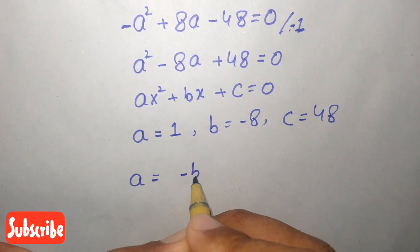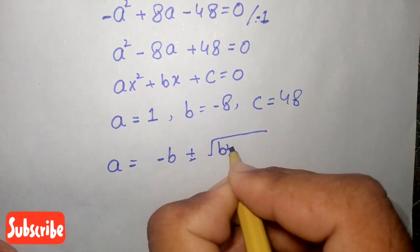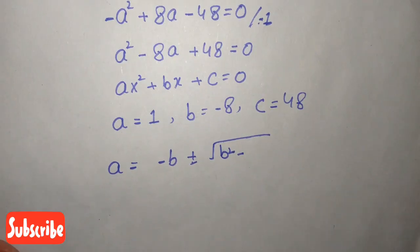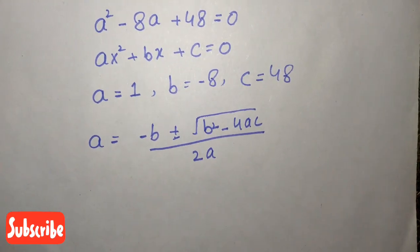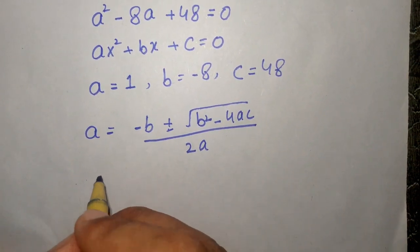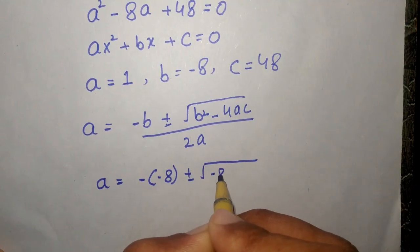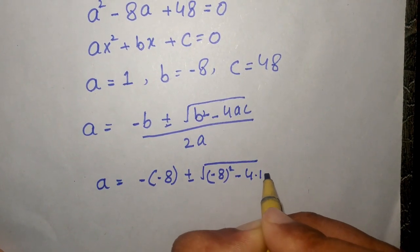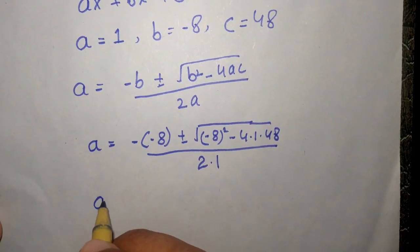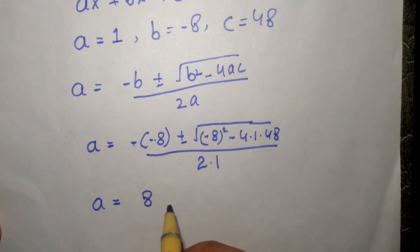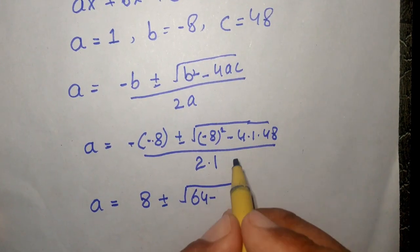We write the quadratic formula: a equals minus B plus or minus square root of B squared minus 4AC, all divided by 2A. Substituting the values — B equals minus 8, C equals 48, A equals 1 — we get: a equals minus of minus 8 plus or minus square root of minus 8 squared minus 4 times 1 times 48, divided by 2 times 1. This gives 8 plus or minus square root of 64 minus 192, divided by 2.